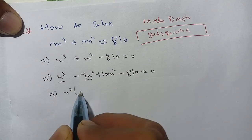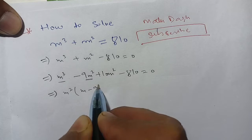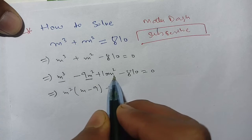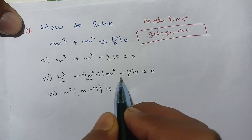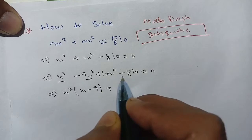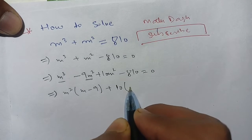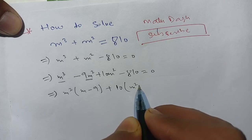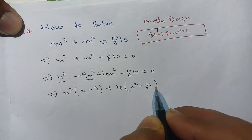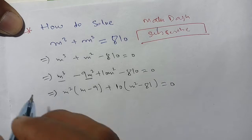Our next step: we take m² common from the first two terms to get m²(m - 9). From the remaining terms, there is no m common, so we take 10 as common to get 10(m² - 81) = 0.